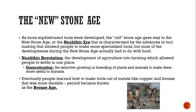This allowed people to settle in one place. Once people began settling, they also began to domesticate animals. Domestication is the selective growing or breeding of plants and animals to make them more useful to humans. They would use these animals to help with agriculture. Eventually, people learned how to make tools out of metal, like copper and bronze, that were more durable, and this period became known as the Bronze Age.